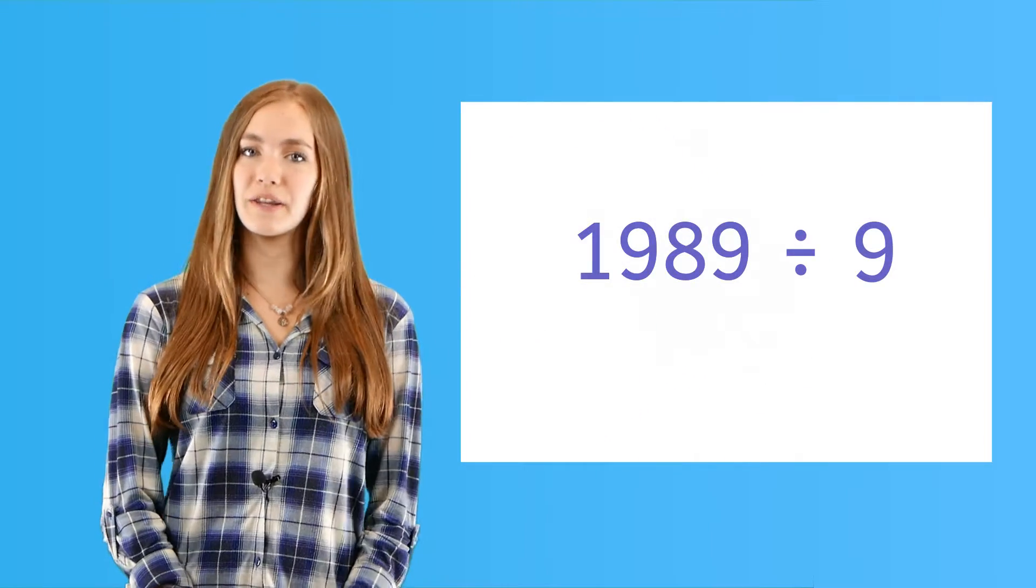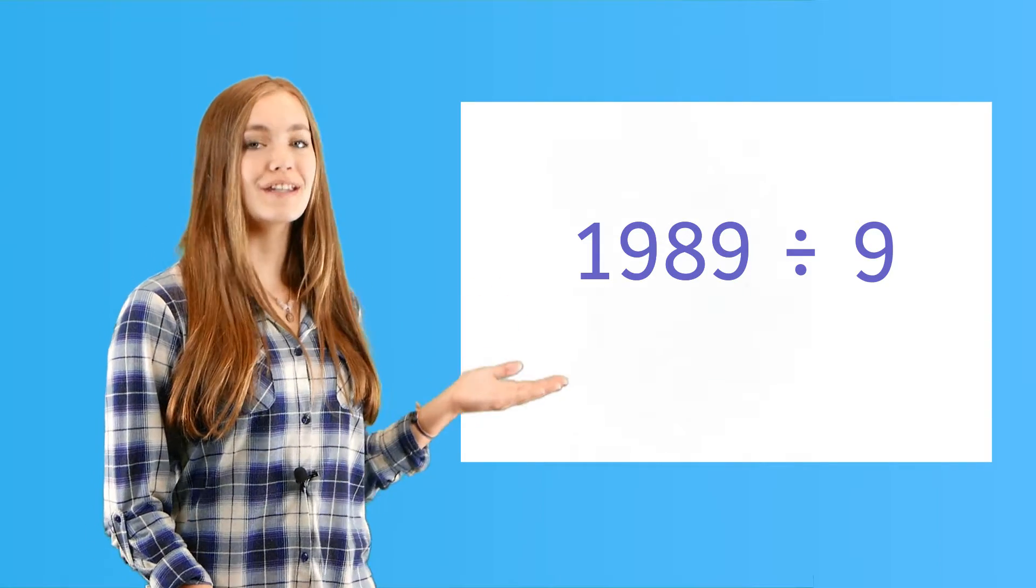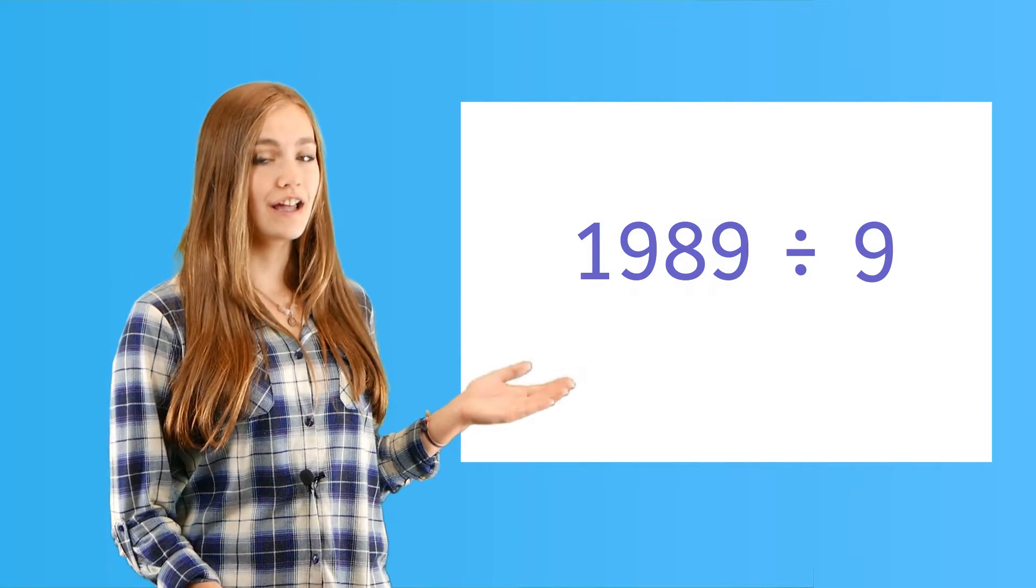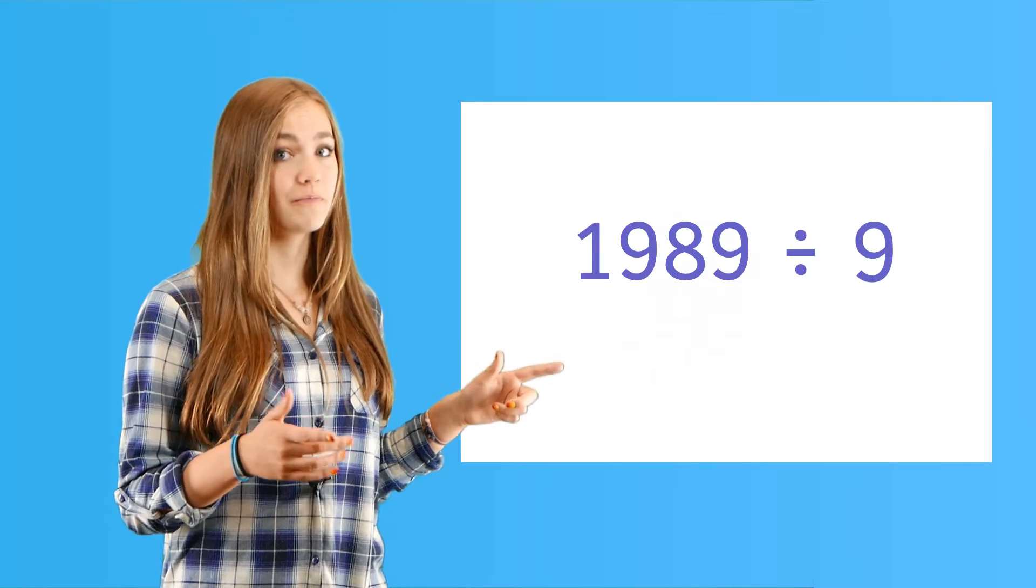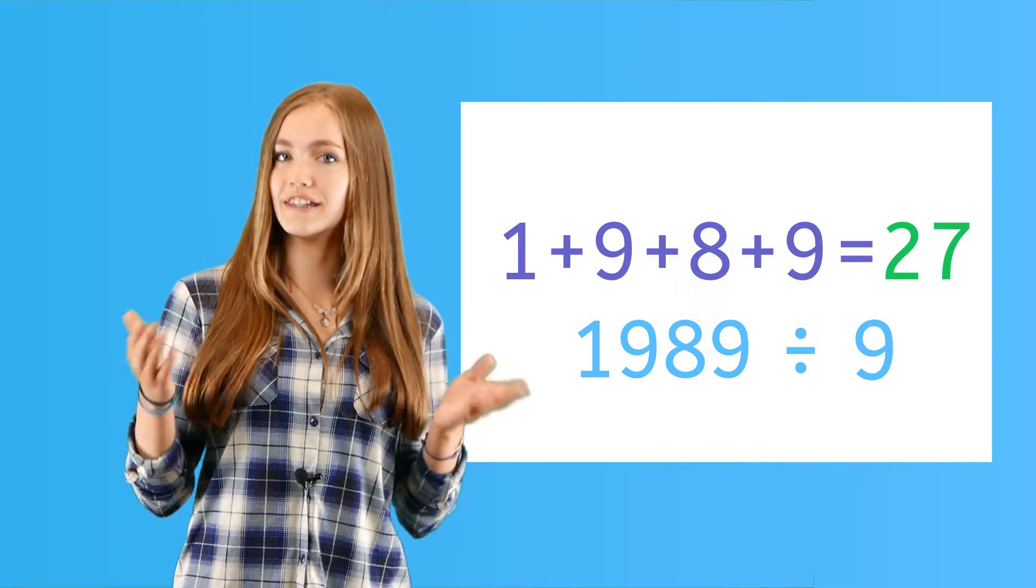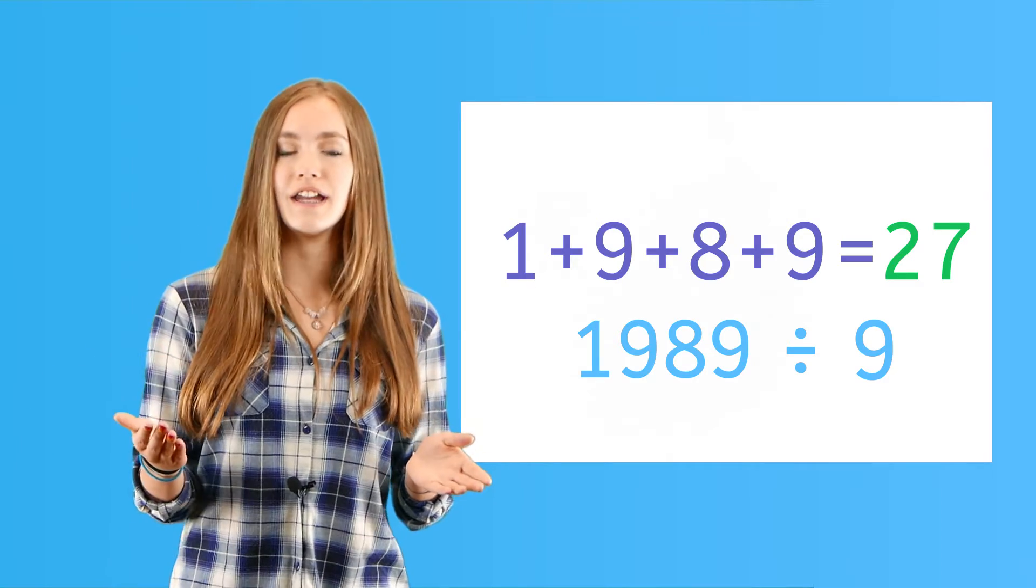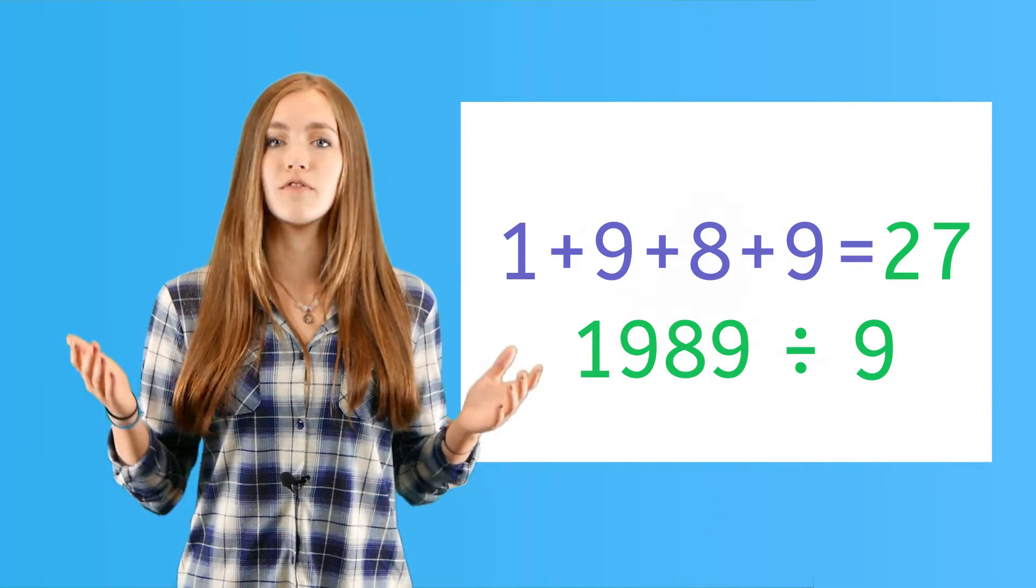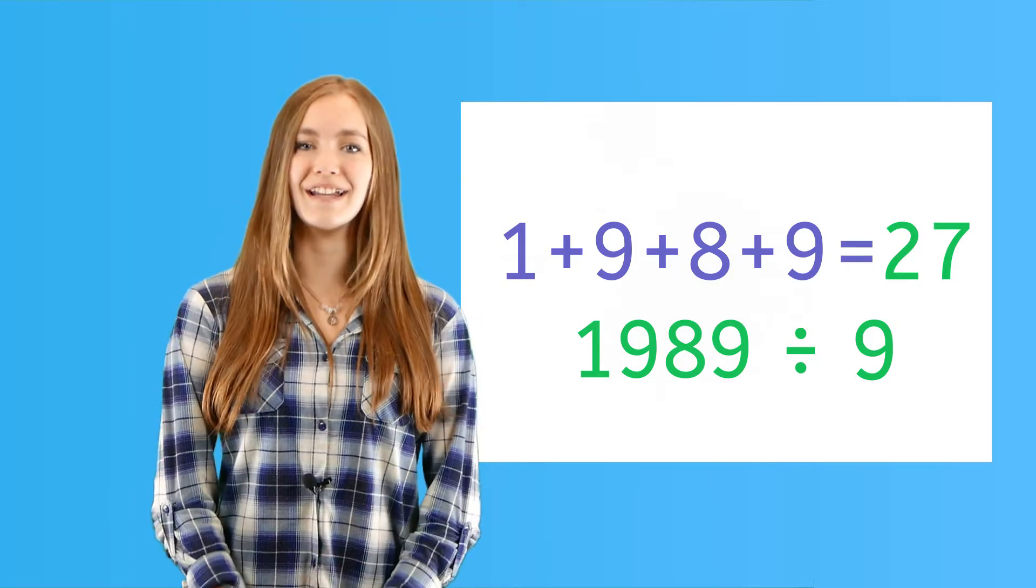Let's look at another one. 1,989. That's a big number. And it adds up to 27, which is the same as 3 times 9. So both of these numbers, we know, are divisible by 9.